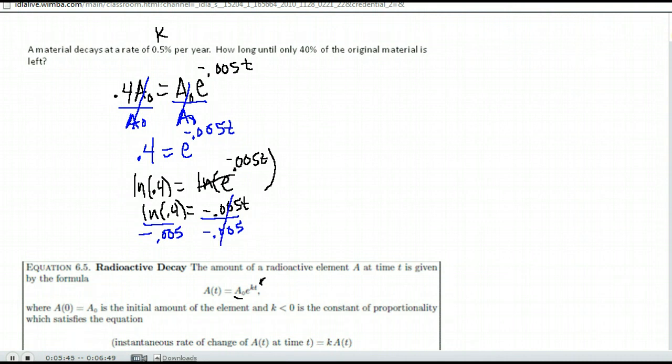And that will tell me how long it's going to take before I have only 40% of the substance left. Again, be very careful here. So do the natural log of 0.4 and press equals, and then divide by negative 0.005, or put the negative 0.005 in parentheses, or your calculator will not give you the right answer. You should get about, just to check yourself, you should get about 183 if you round to the nearest year. So it would take 183 years before it decays so that there's only 40% of the substance left.